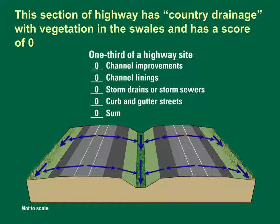This diagram shows another section of highway with country drainage. Runoff flows directly off the pavement into grassy swales in the median and on the shoulders. These swales are not identified as having channel improvements; although designed as straight stormwater conveyances, the thick vegetation acts as a flow obstruction. The other BDF factors are zero, so this section has a total score of zero. Three such sections would produce a BDF of zero.